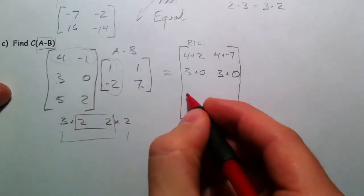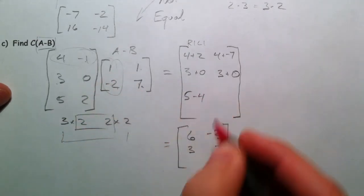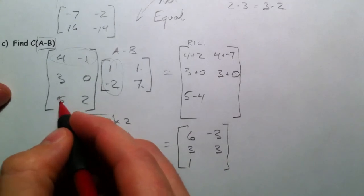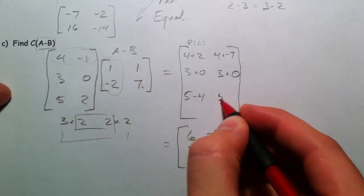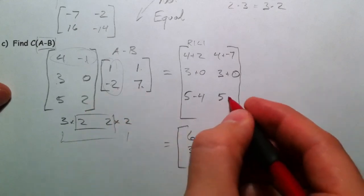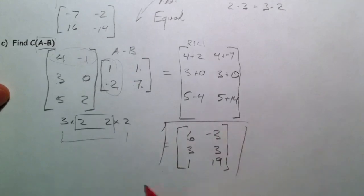5 times 1, 2 times negative 2. 5 times 1, and 2 times 7. 5 times 1, and there you have it. Our solution.